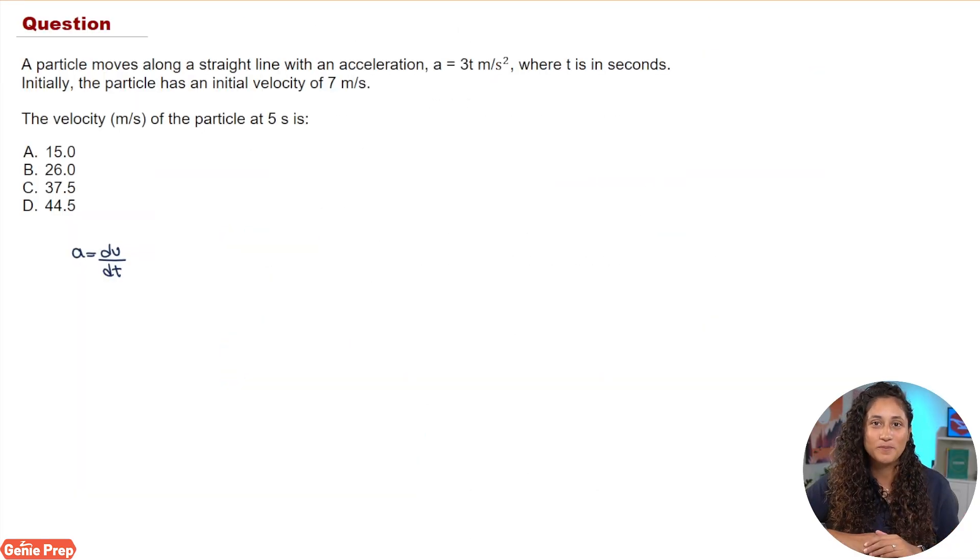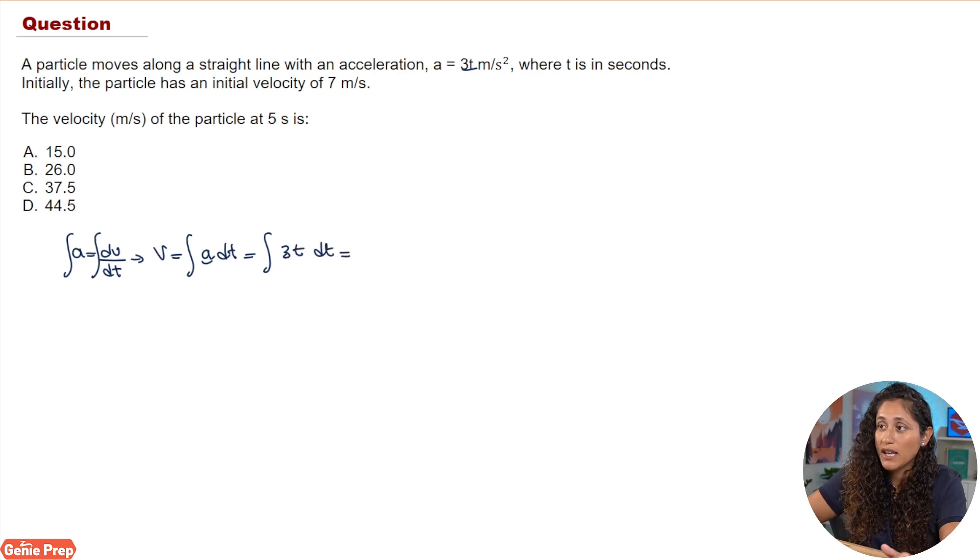Okay guys, so as we discussed before, this is the equation that we're going to use. We are trying to solve for the velocity, so we're going to integrate both sides. We're going to have the velocity equal to the integral of acceleration times dt. Now acceleration was given to us which is 3t, so let's go ahead and replace that. We're going to have the integral of 3t times dt.